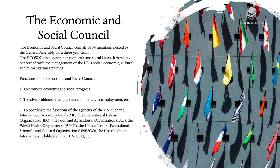The Economic and Social Council consists of 54 members elected by the General Assembly for a three-year term. It discusses major economic and social issues and is mainly concerned with the management of the UN's social, economic, cultural, and humanitarian activities. Its functions include promoting economic and social progress; solving problems relating to health, illiteracy, and unemployment; and coordinating the functions of UN agencies such as the International Monetary Fund, the International Labour Organization, the Food and Agriculture Organization, the World Health Organization, and UNESCO.